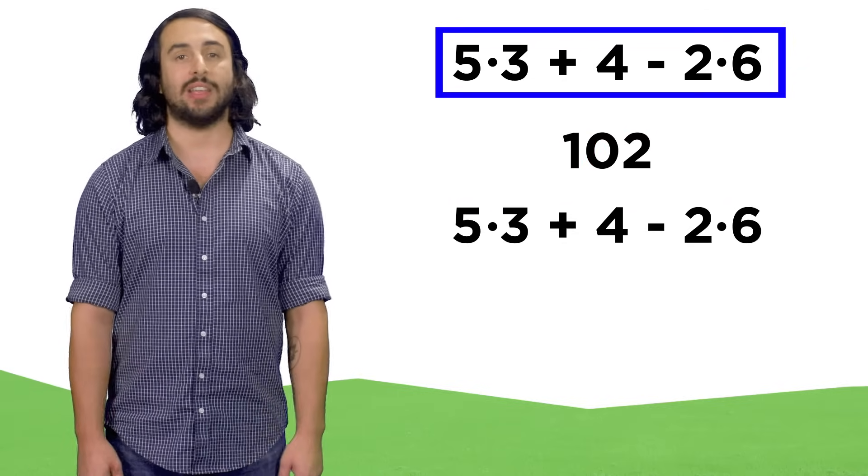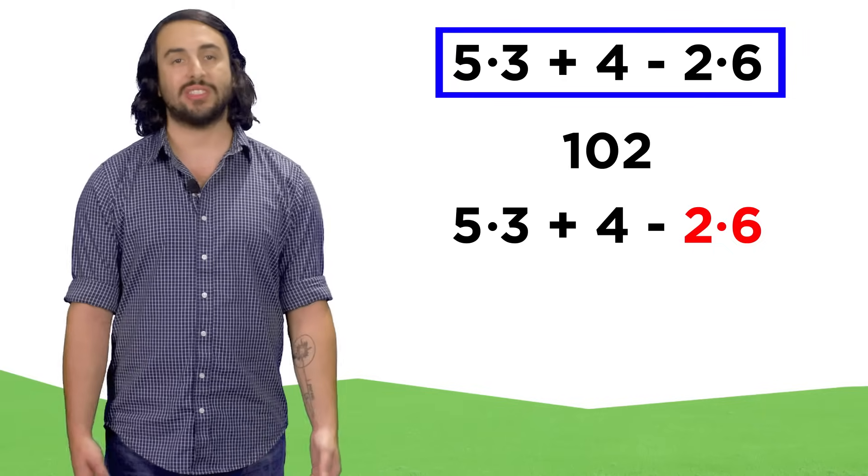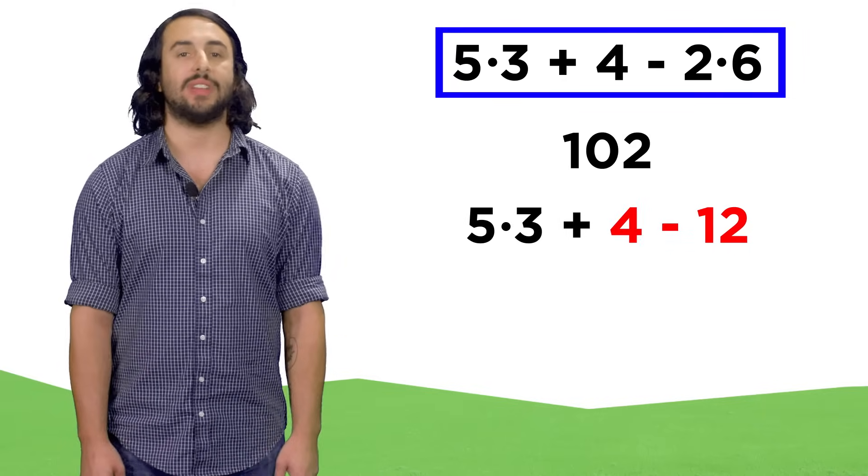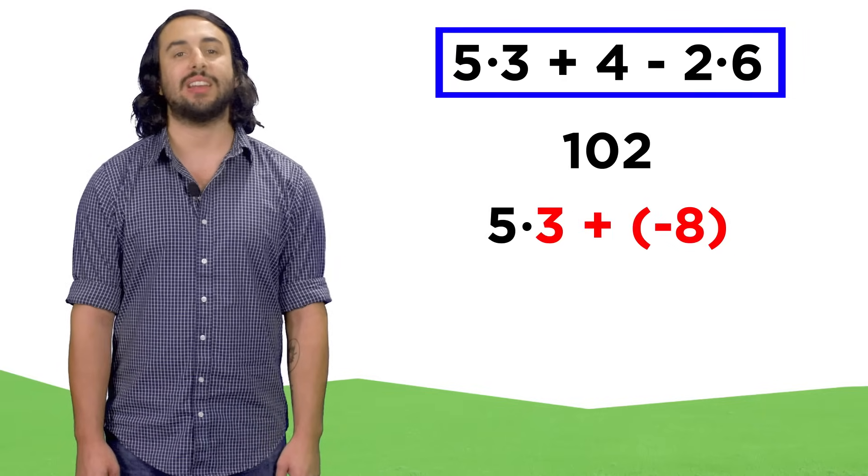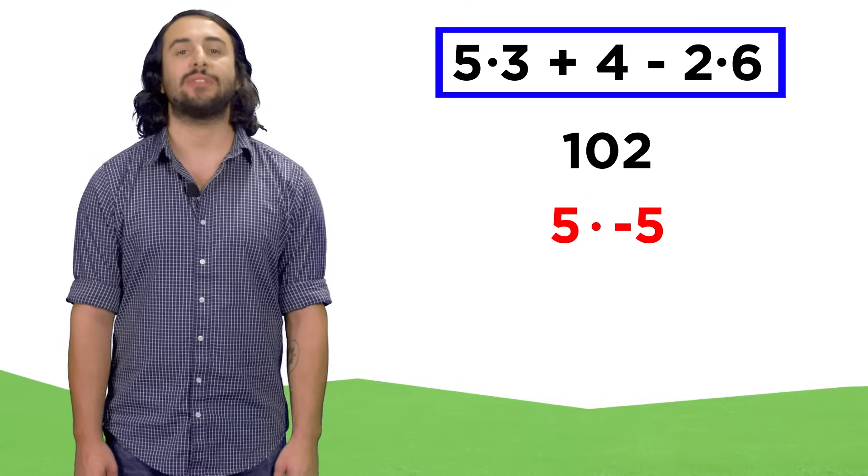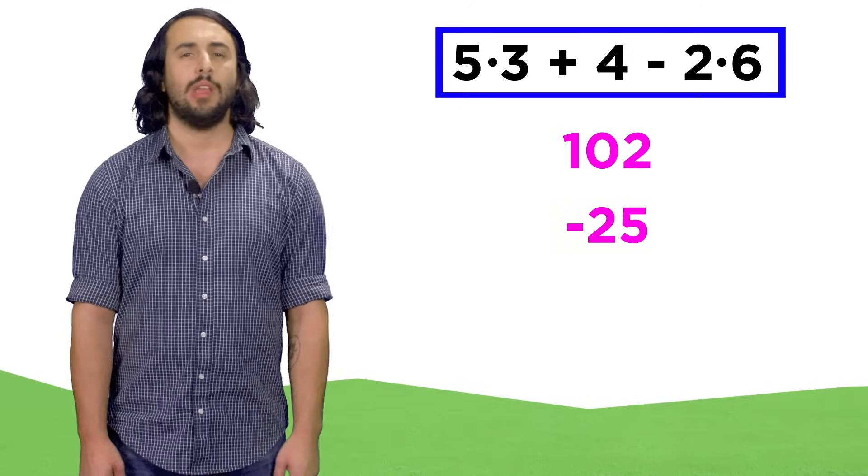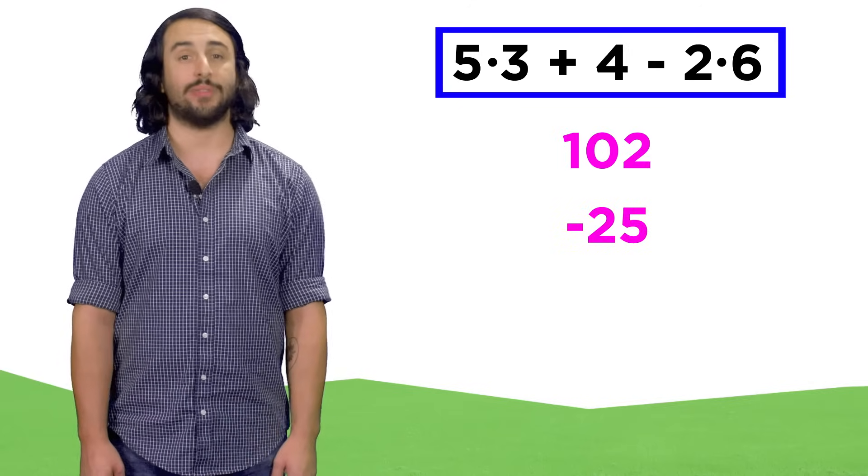Out of curiosity, what if we start from the right? Two times six is twelve, four minus twelve is negative eight, three plus negative eight is negative five, and five times negative five is negative twenty-five. Well that's strange, that's a totally different number.